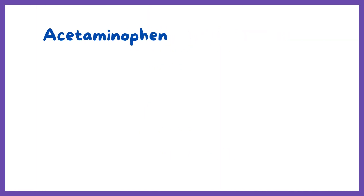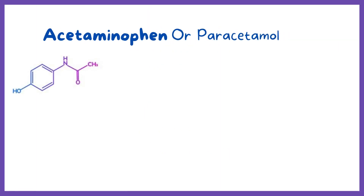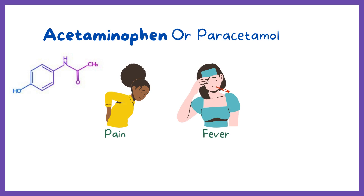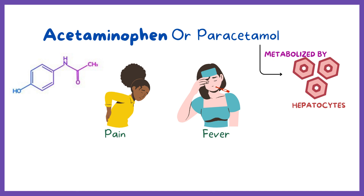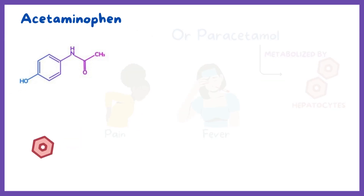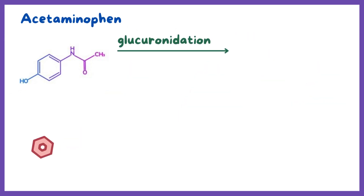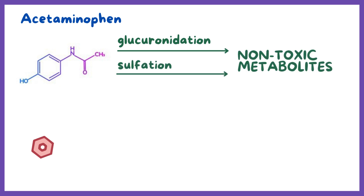Acetaminophen, also known as paracetamol, is mainly used to treat pain and fever. Acetaminophen is metabolized by the hepatocytes in the liver. Hepatocytes mainly metabolize acetaminophen by glucuronidation and sulfation to non-toxic metabolites, which are then excreted in the urine.